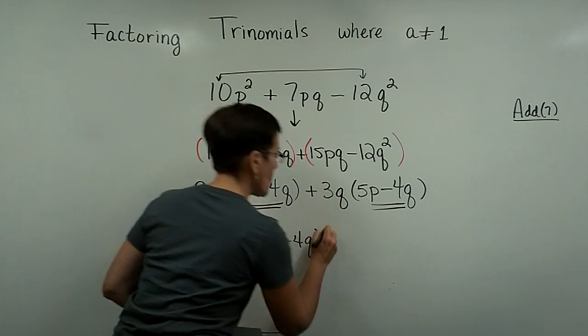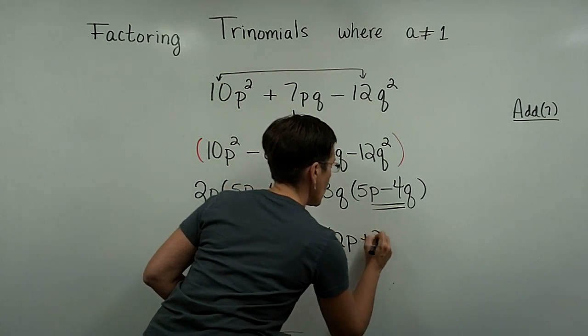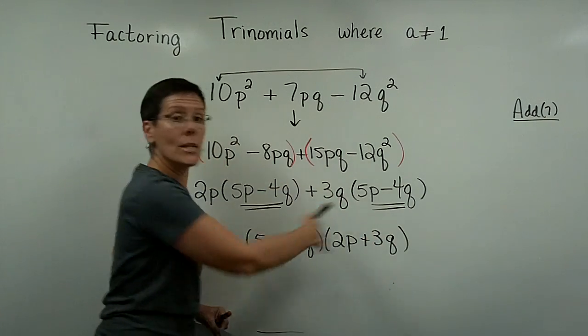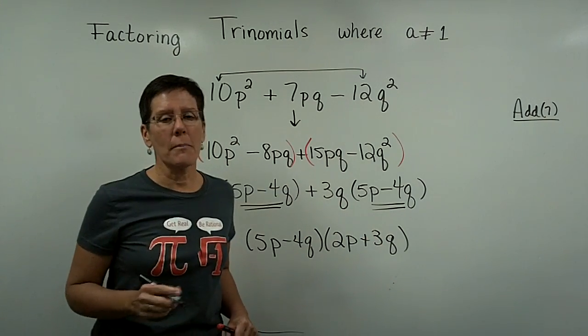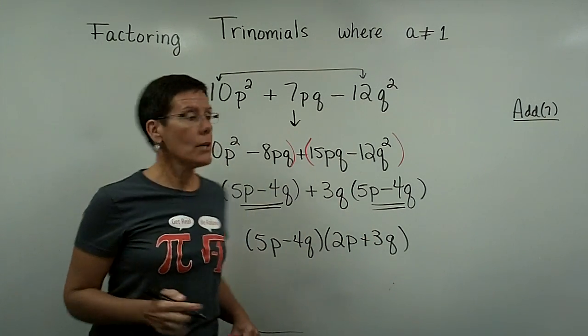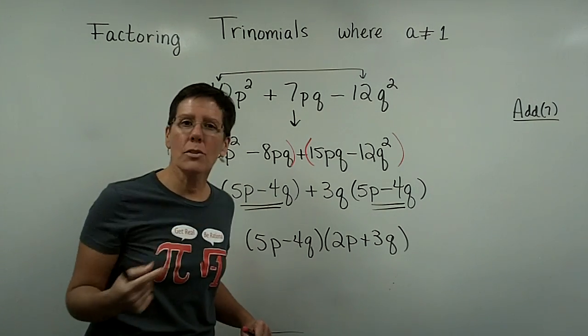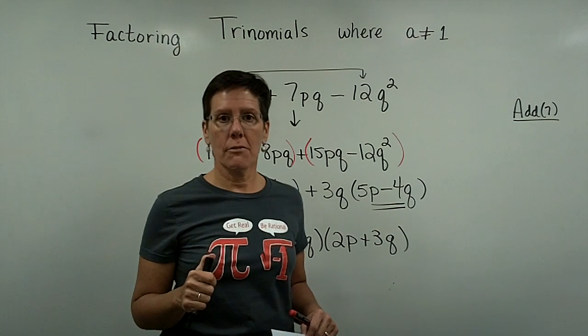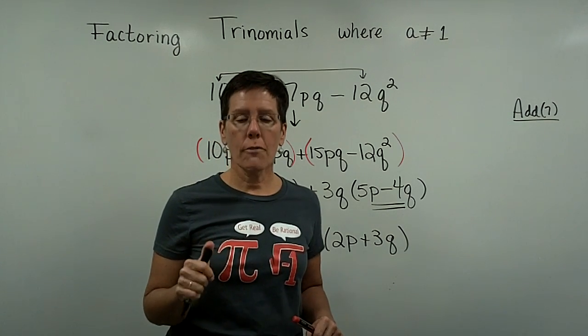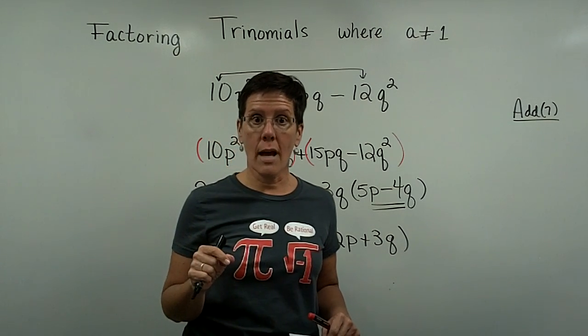And then this 2p plus 3q goes in the other binomial. And guaranteed this works, although you should FOIL it and check it out to see if you get the original problem. This is going to conclude my segment of videos on factoring trinomials, where the coefficient in front of the x squared term is not a 1.